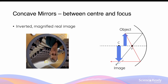The intersection between the two is over here. This is still inverted, but now you can see that the arrow as an image is bigger than the original object, so it is magnified. And since the intersection of the image is formed in front of the concave mirror, it is known as a real image.